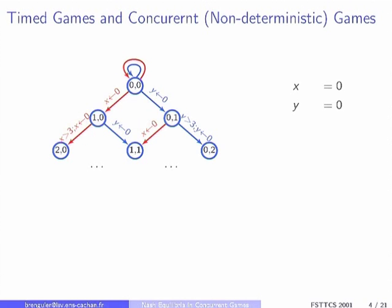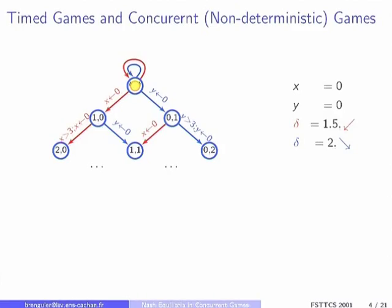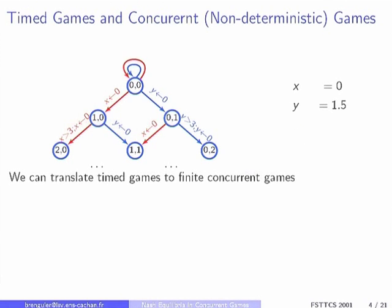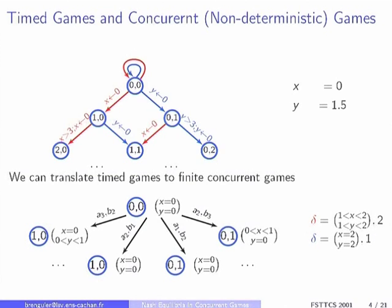The way it's played: you put a token in the initial state. Both players choose a delay and a transition of their color. For instance, the red player chooses a delay of 1.5 and the transition going down, and the blue player chooses a delay of 2 and the transition going to the right. Among all these actions, you take the one with the smallest delay — here it's 1.5. So you take the red transition and move the token. You update the clocks and continue the game, giving you an infinite play. If you know about timed automata, you know about the region construction, and using the same thing you can translate the timed games into a concurrent game that is finite.